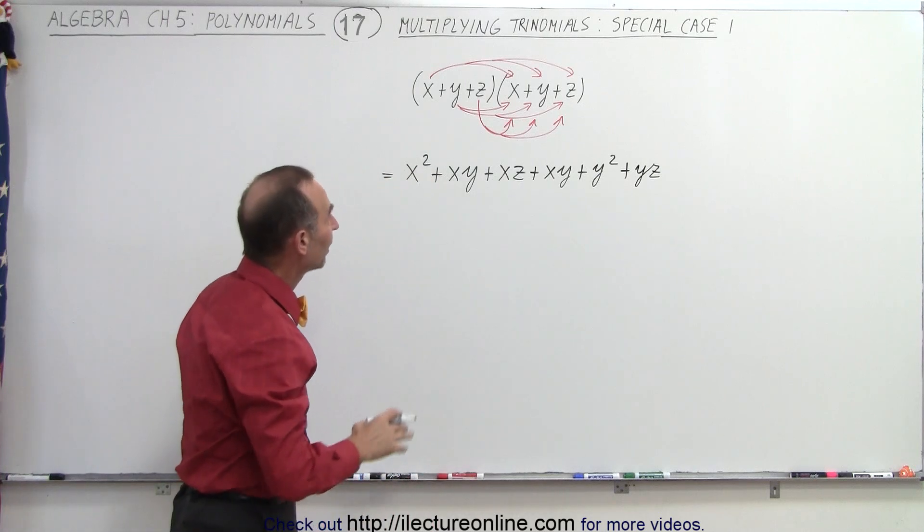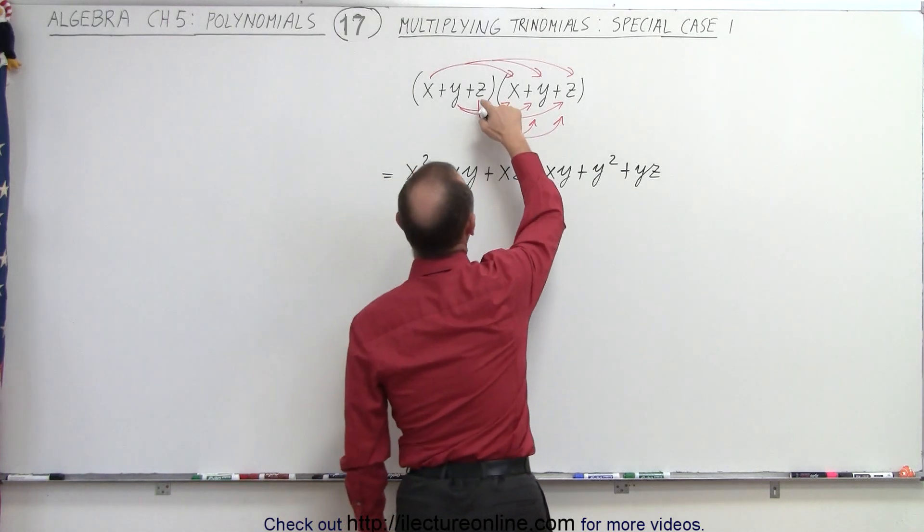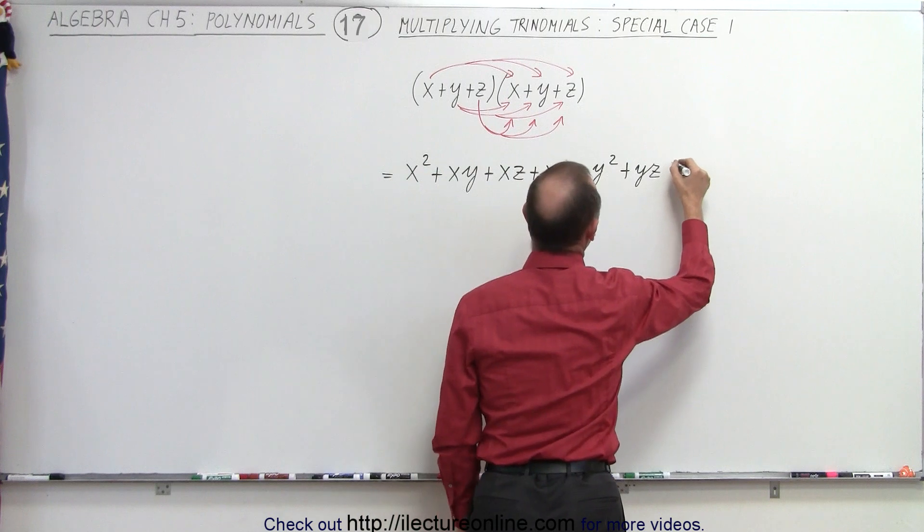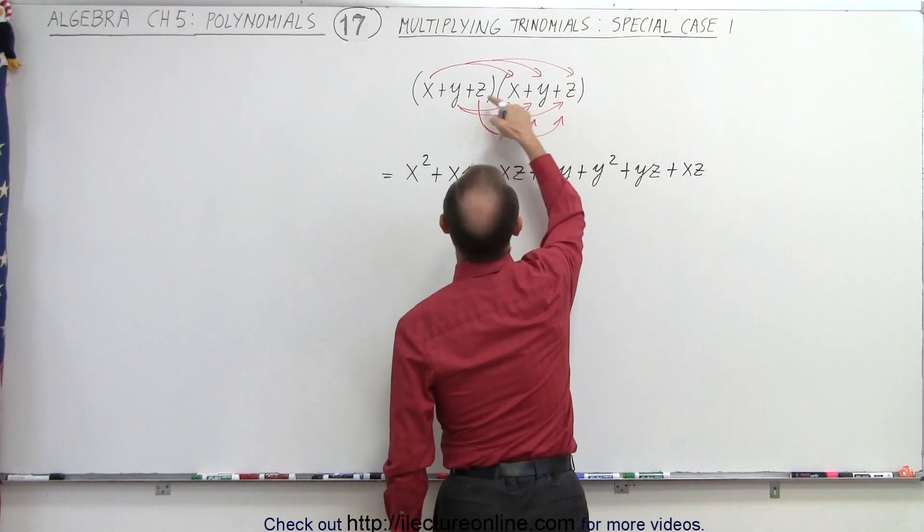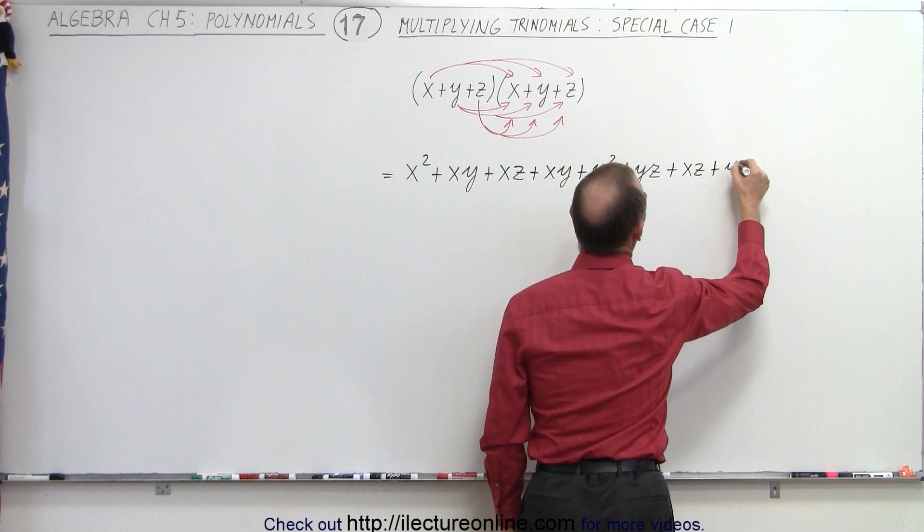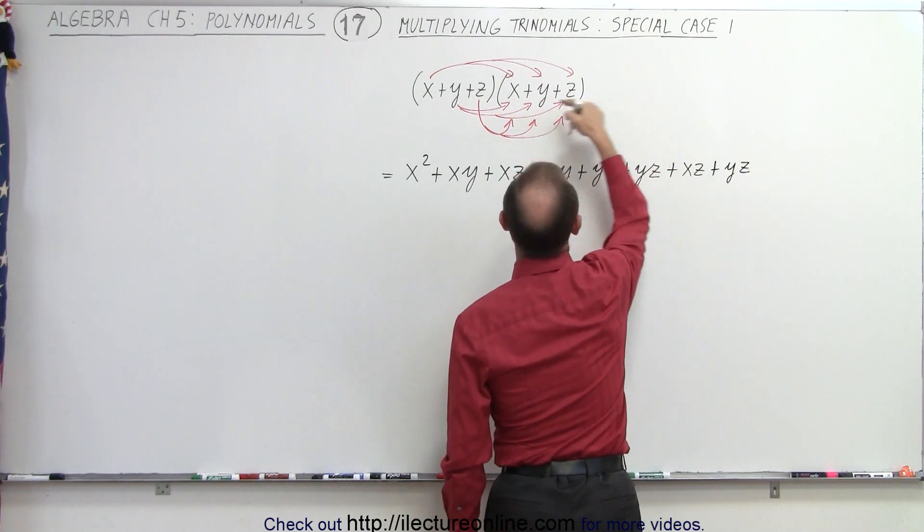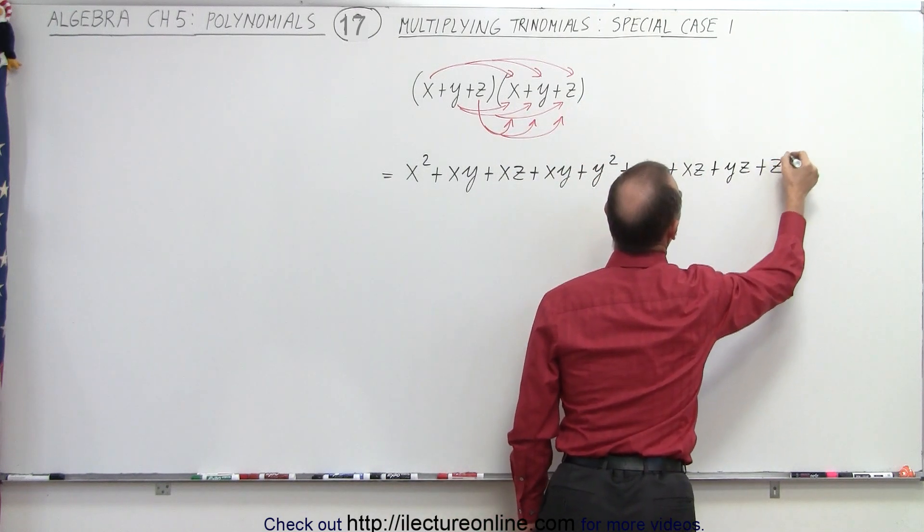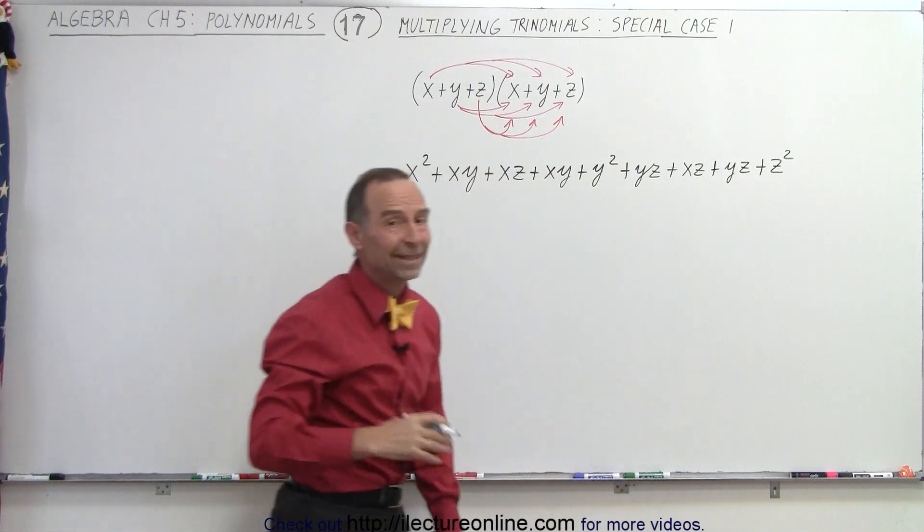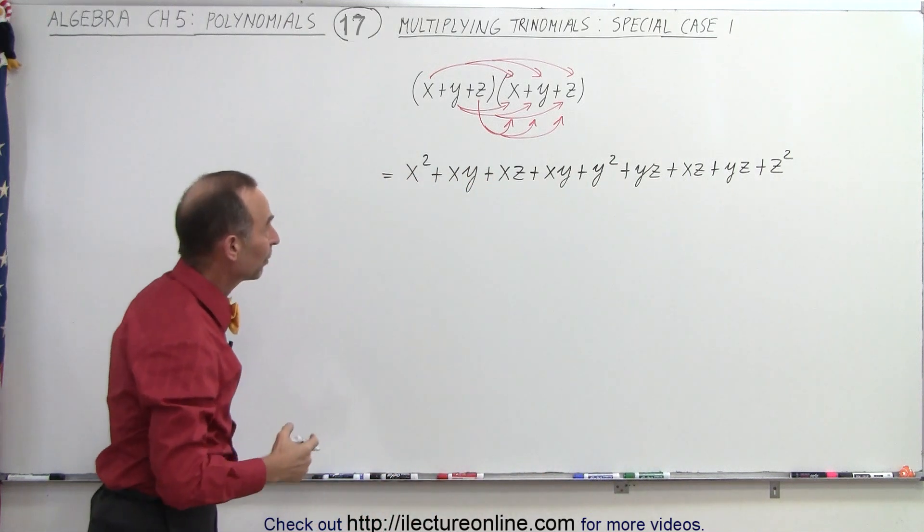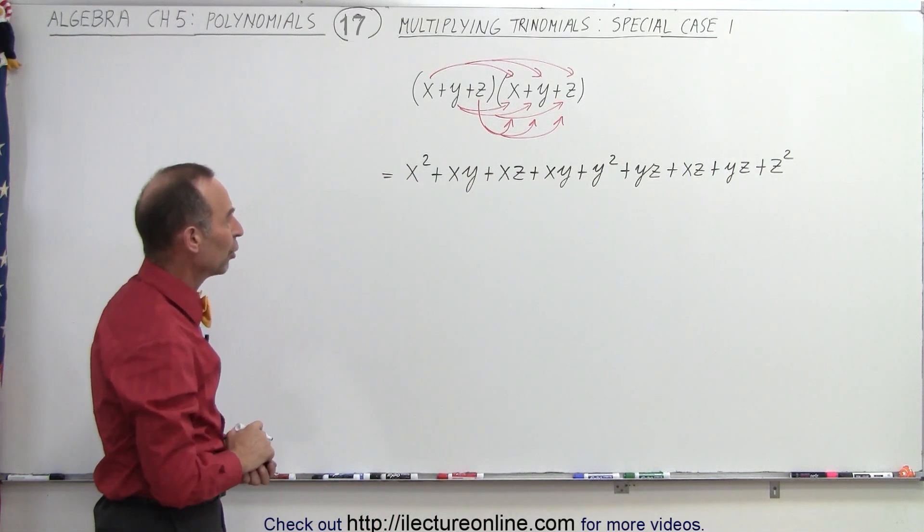And finally, the last three terms, when we multiply z times x, but we'll write it as xz, z times y, we'll write as +yz, and z times z +z². And notice we have nine terms from multiplying two trinomials.